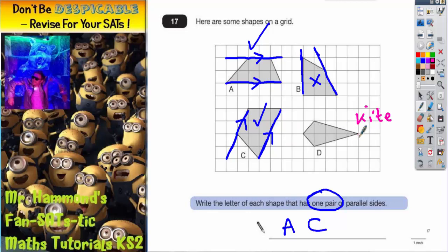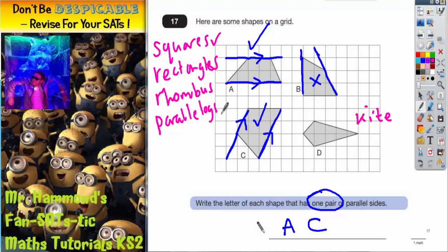Kites are the only quadrilateral of the main six types of quadrilateral that does not have parallel lines. Squares do. Rectangles do. A rhombus does. A parallelogram does have parallel lines. And a trapezium does.